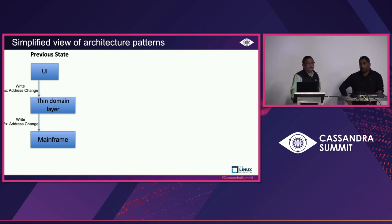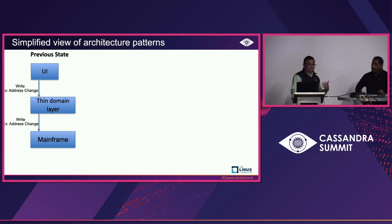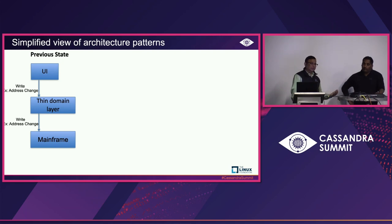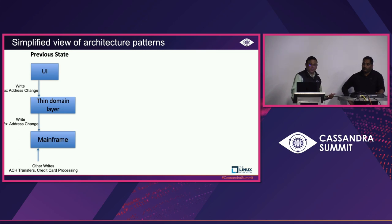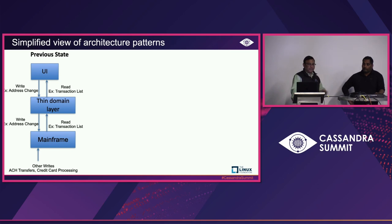Here's a simplified architecture view. From a UI — mobile app, web app, or customer agent — someone makes an address change. It goes through a thin domain layer, which is essentially security with no business rules, then to the mainframe where all business rules live. The mainframe returns data back to the UI. From the back end, there are also batch updates and real-time processes like credit card processing or ACH transfers, all of which feed read transactions back to the UI.